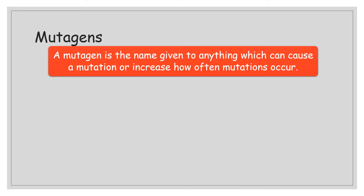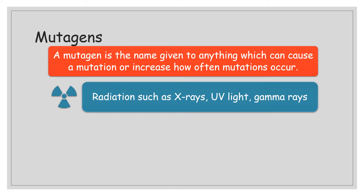Mutations happen randomly and rather infrequently, but there are some conditions that make mutations happen more readily. Mutagens is the name for anything that can cause a mutation or increase how often mutations occur. These include radiation, such as X-rays, UV light, and gamma rays. When you get an X-ray for a broken arm or at the dentist, the people administering the X-rays protect themselves — one or two X-rays is not a problem, but doing a multitude of X-rays every day could cause them problems.